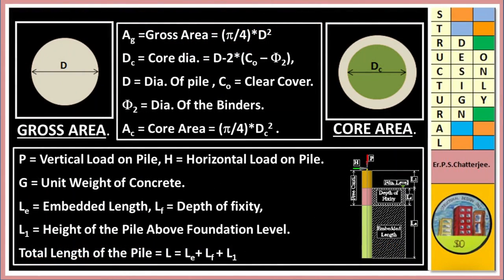For the circular pile: gross area Ag = π/4 × D². Core area Ac = π/4 × Dc², where Dc = D − 2 × cover − diameter of binder. Key parameters: P = vertical load on pile, H = horizontal load on pile, g = unit weight of concrete, Le = embedded length, Lf = depth of fixity, L1 = height of pile above foundation level. Total pile length L = Le + L1.